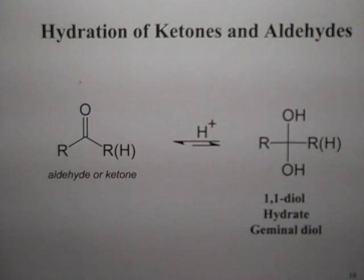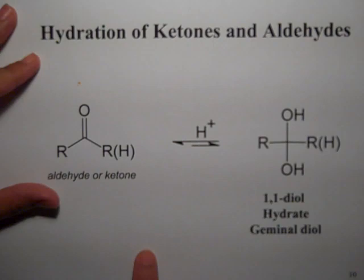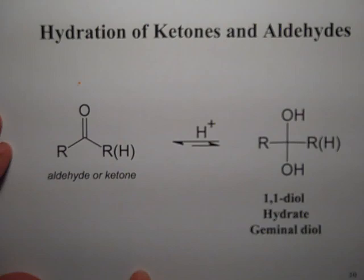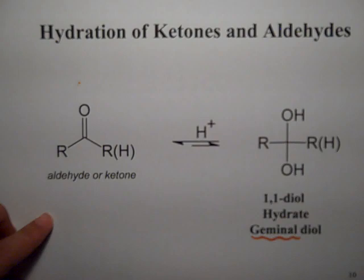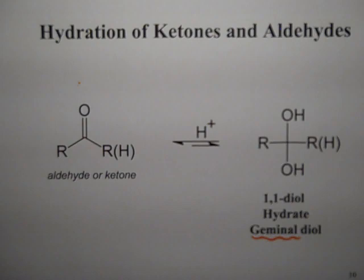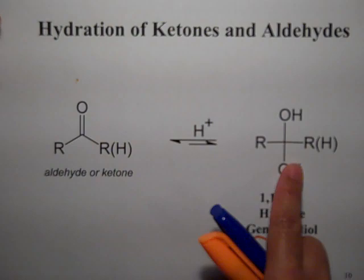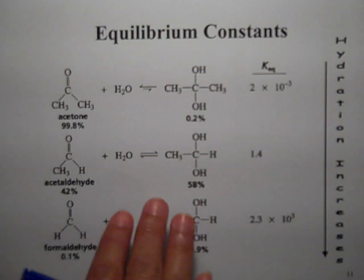We're going to hydrate ketones and aldehydes. When you add water to the carbonyl, you can do it under acidic or basic conditions. What happens is you form a hydrate — you get two OH groups attached to the same carbon, which is called a geminal diol. Geminal means the two groups are attached to the same carbon. The geminal diol formation is not a favored reaction, but it's useful because we can compare the reactivity with water and see which carbonyl is going to be more reactive.